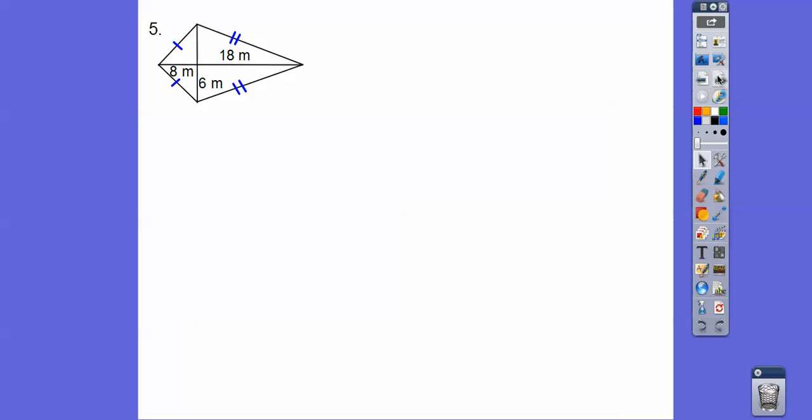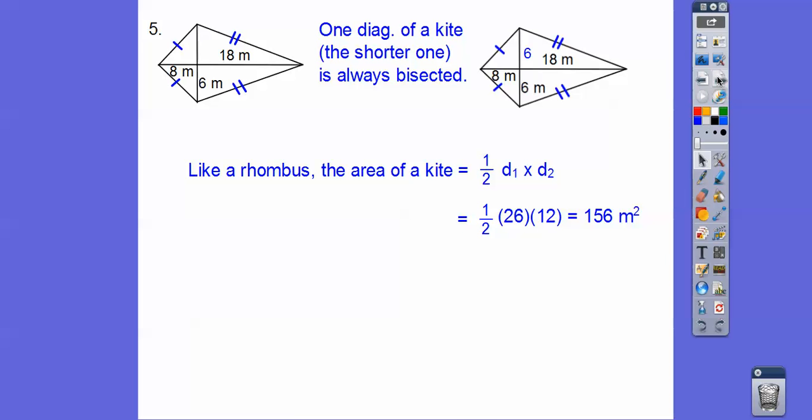So this is a kite, you guys. A kite, there's always one diagonal that's bisected. It's always this shorter one. So if that's 6, that's 6. And so the area of a kite is just like a rhombus. It's half the product of the diagonals. So this diagonal is 26, this diagonal is 12. Half of 26 times 12 is 156 meters squared.